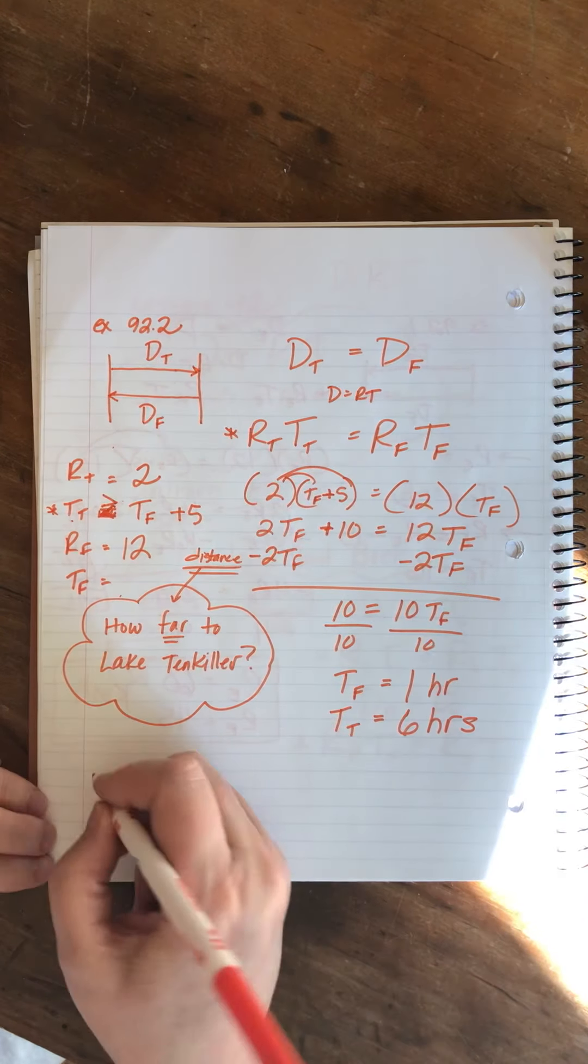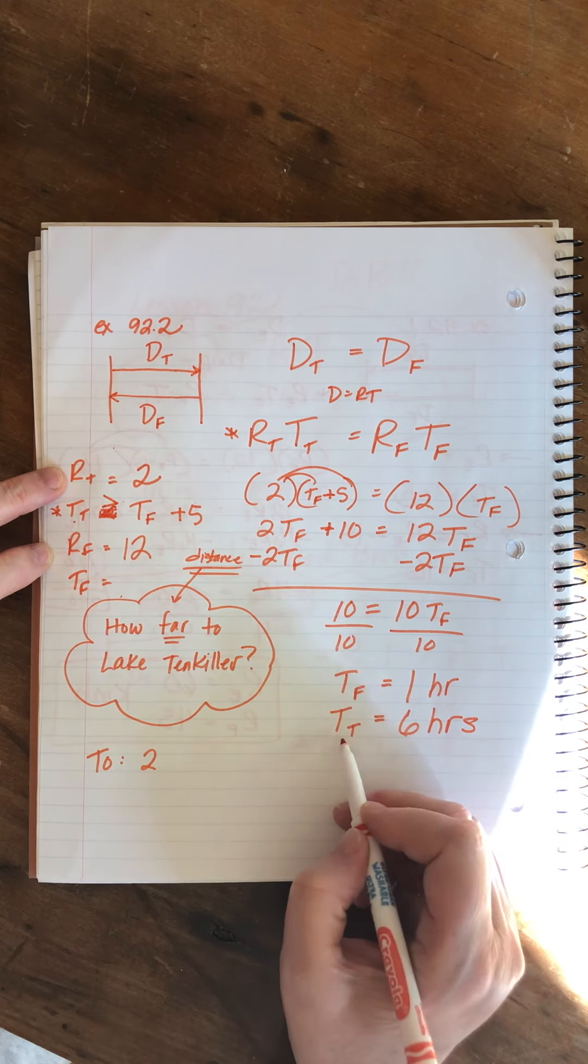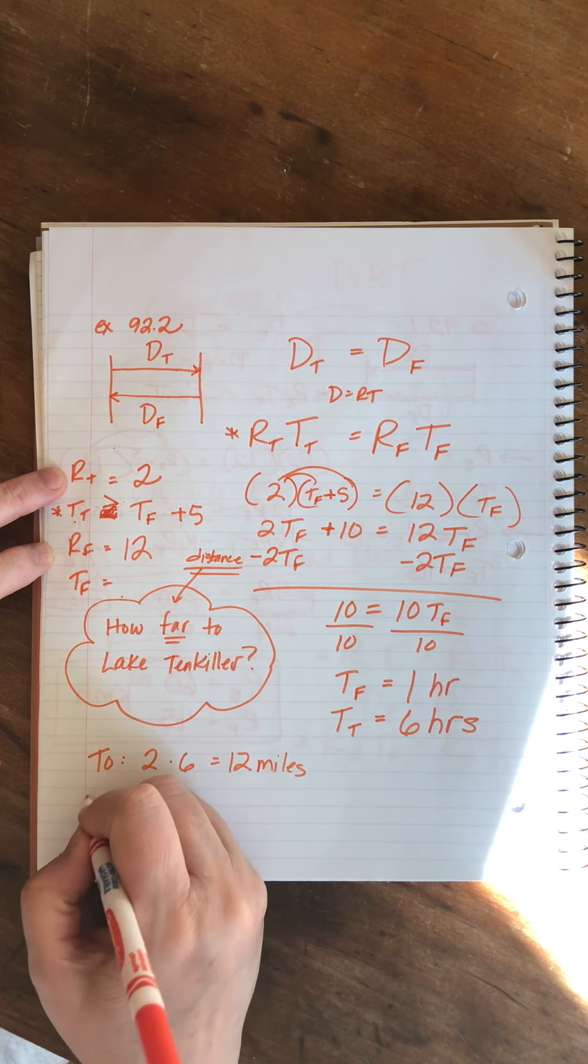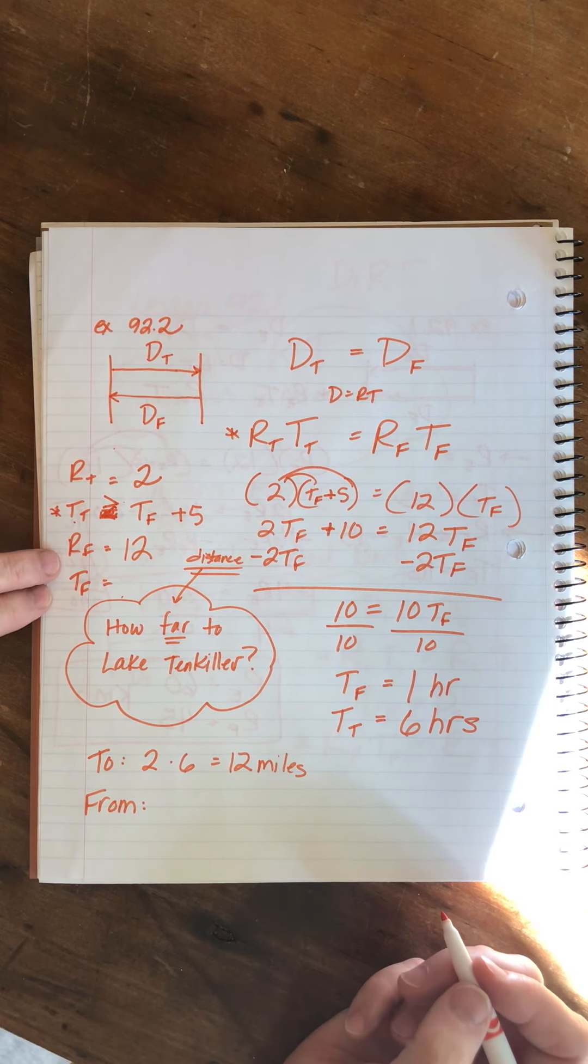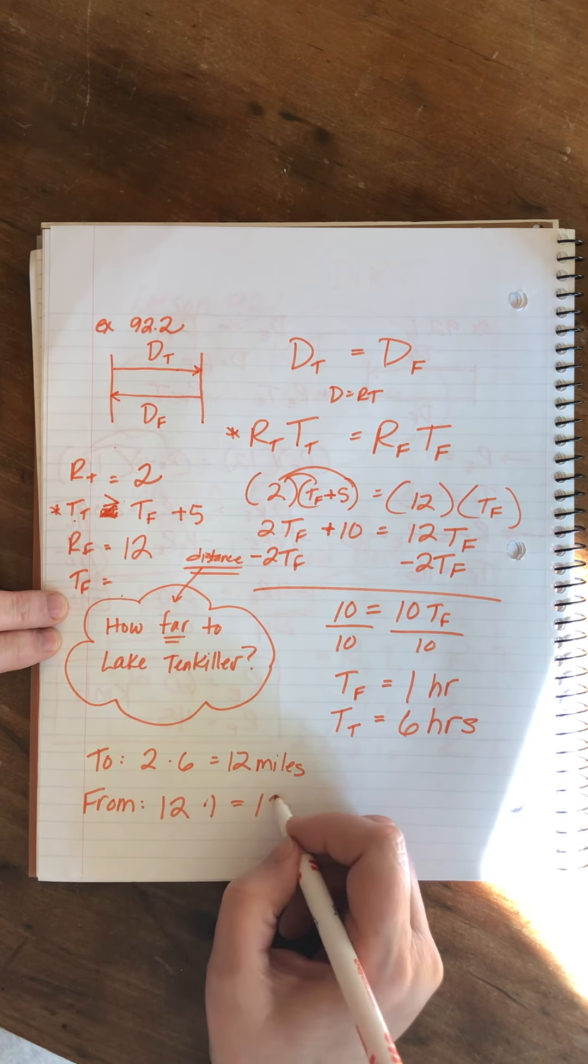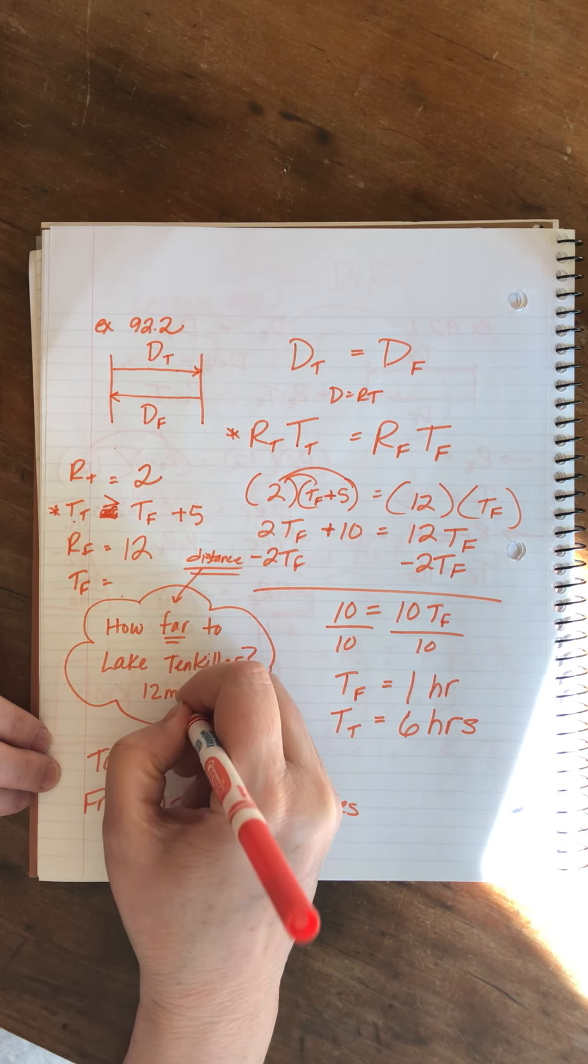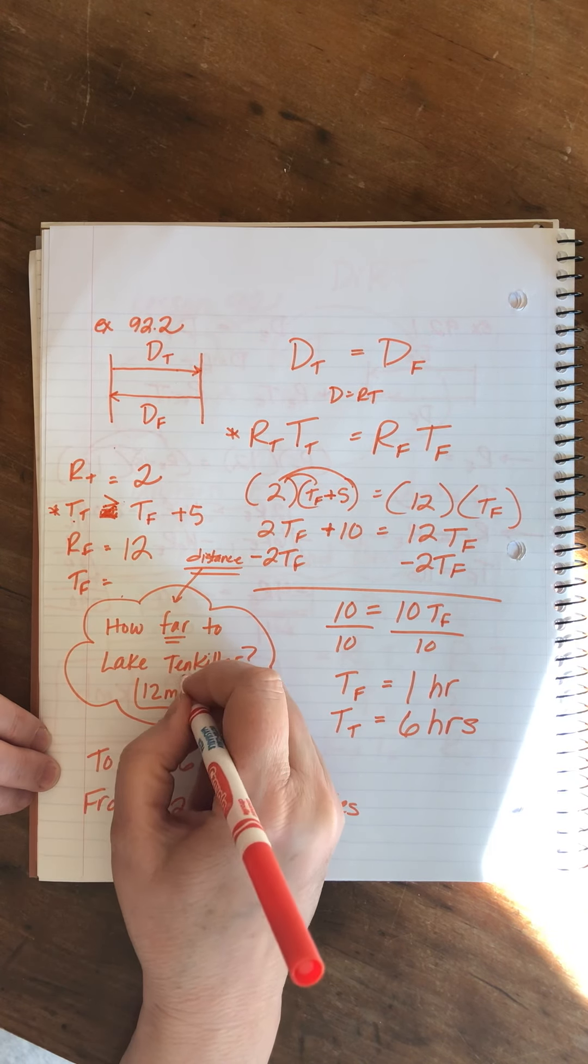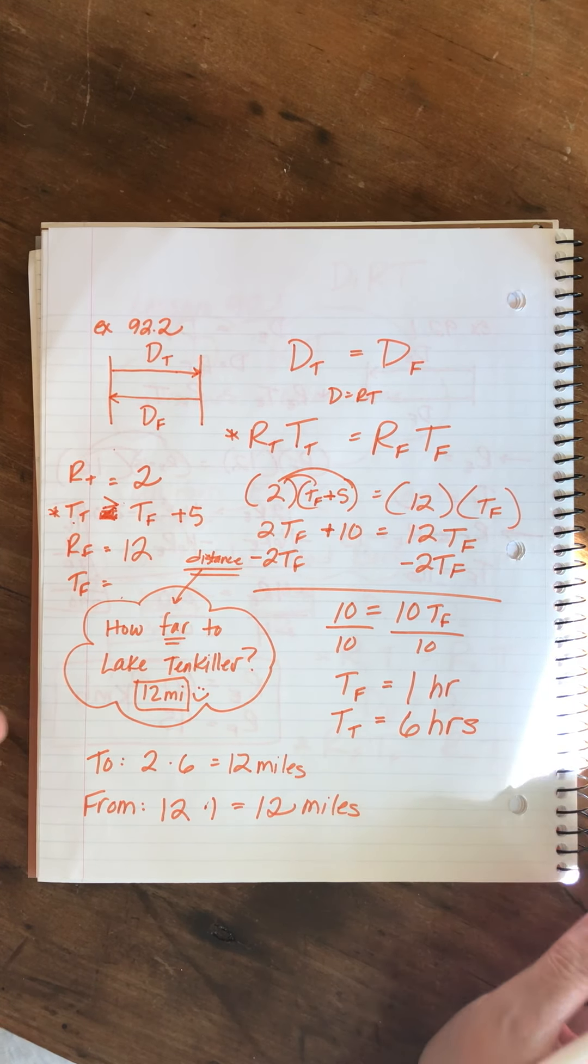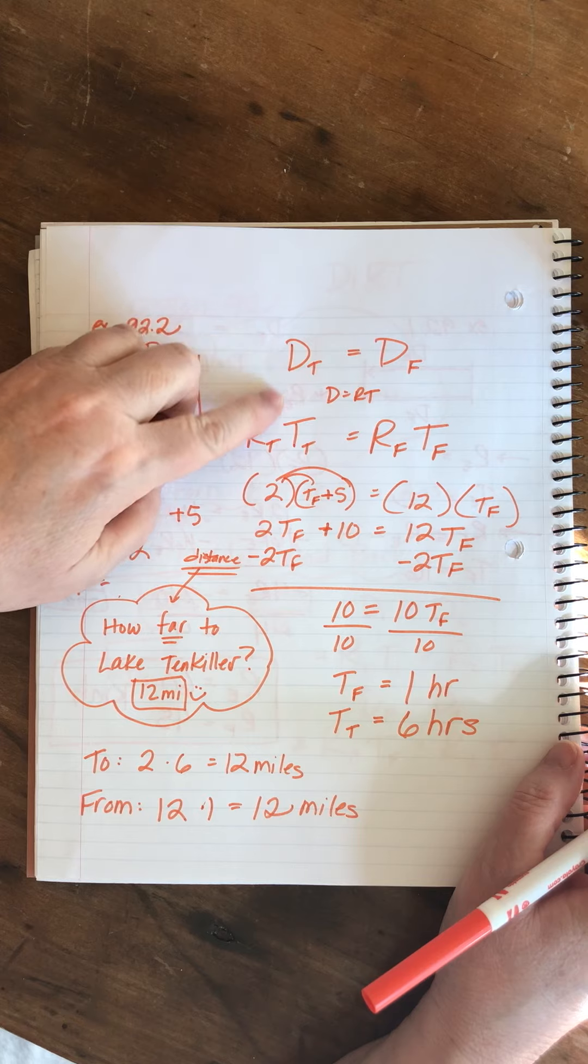If we want to measure going to the lake, then we would take the rate of two and multiply it by the time, six. That tells us that it's twelve miles to the lake. If we want to measure it with our data coming from the lake, the rate they traveled is twelve, and the time is one. So that is also twelve miles. So how far is it to lake ten killer? The answer is twelve miles. Yay. That's a tricky one and it's a good reminder to always check back at the problem to make sure you're answering the question that it's actually asking. And when they say how far, that's a distance and we have to calculate it using rate times time.